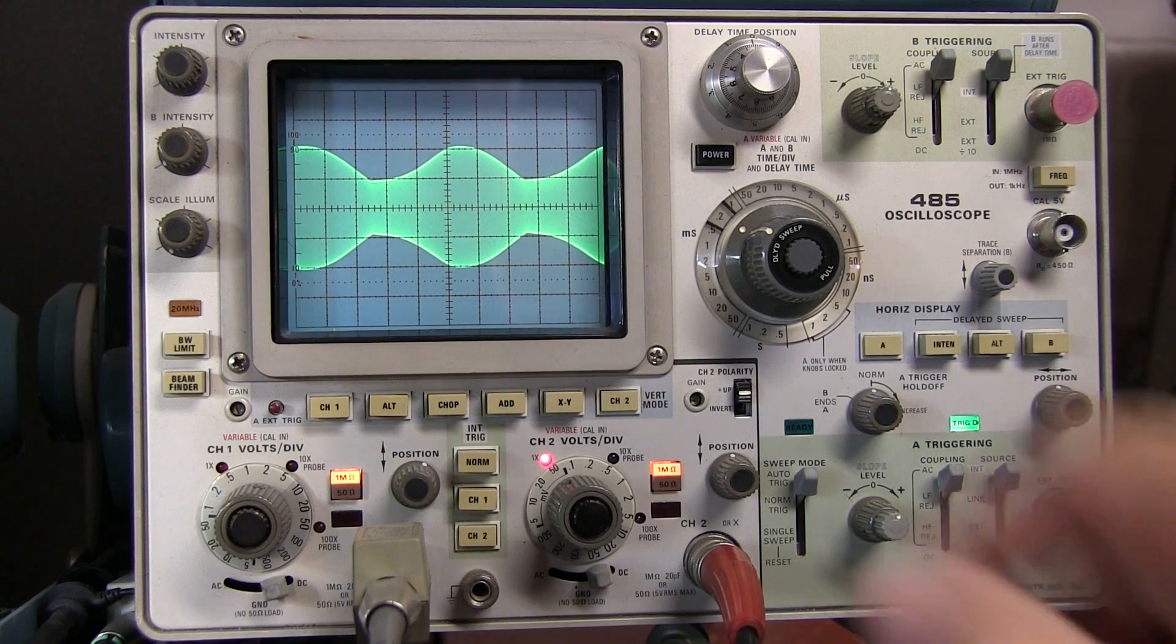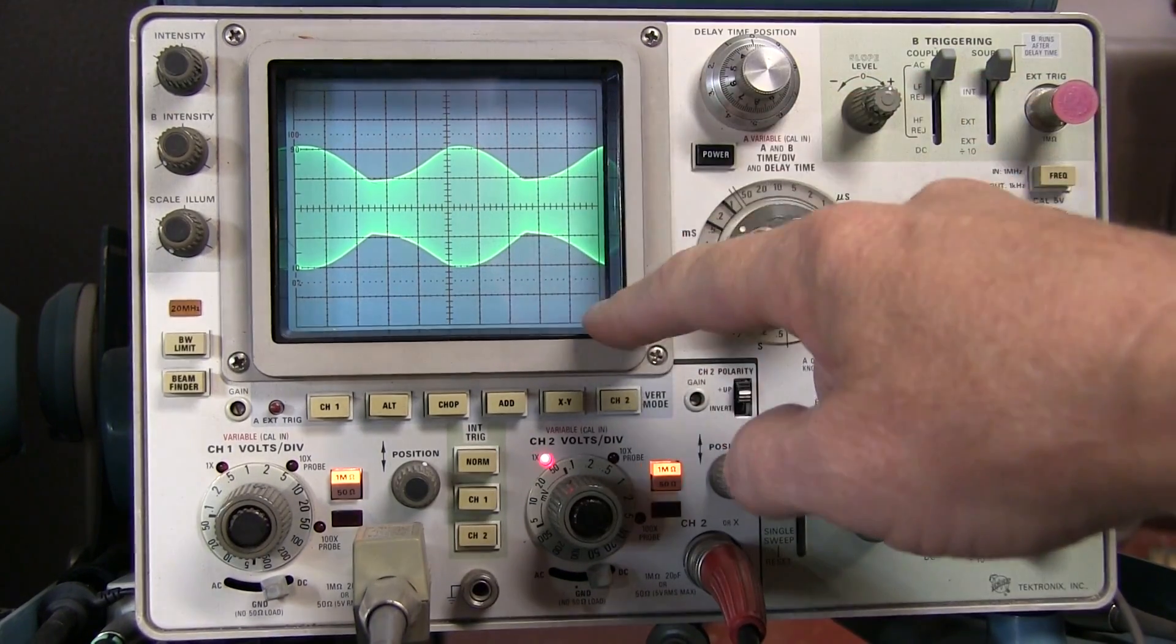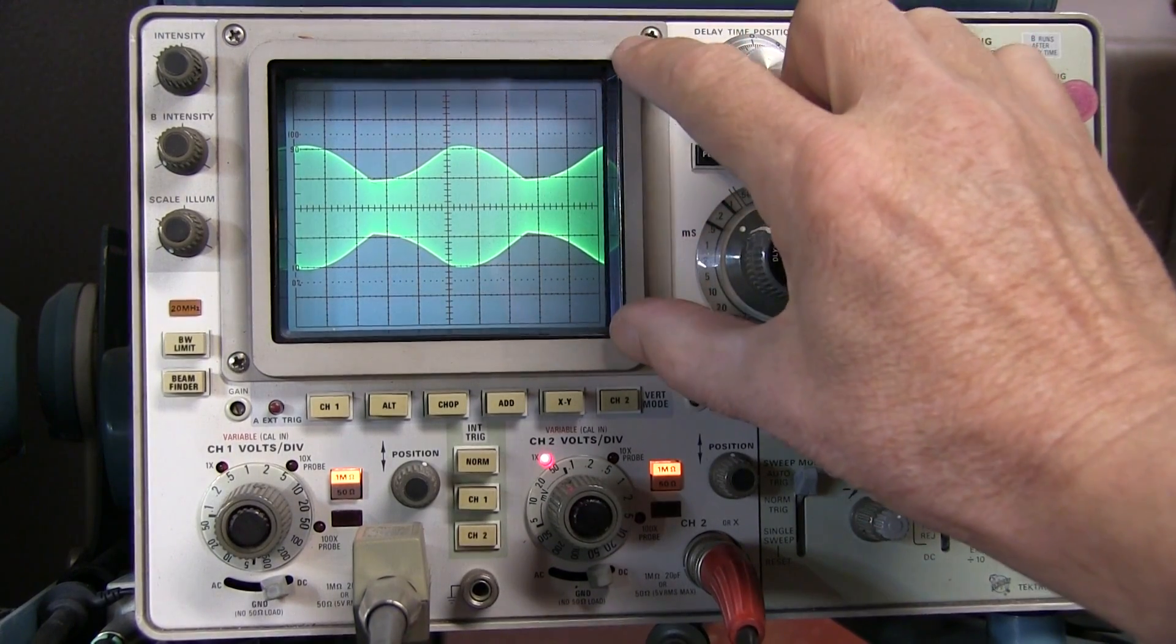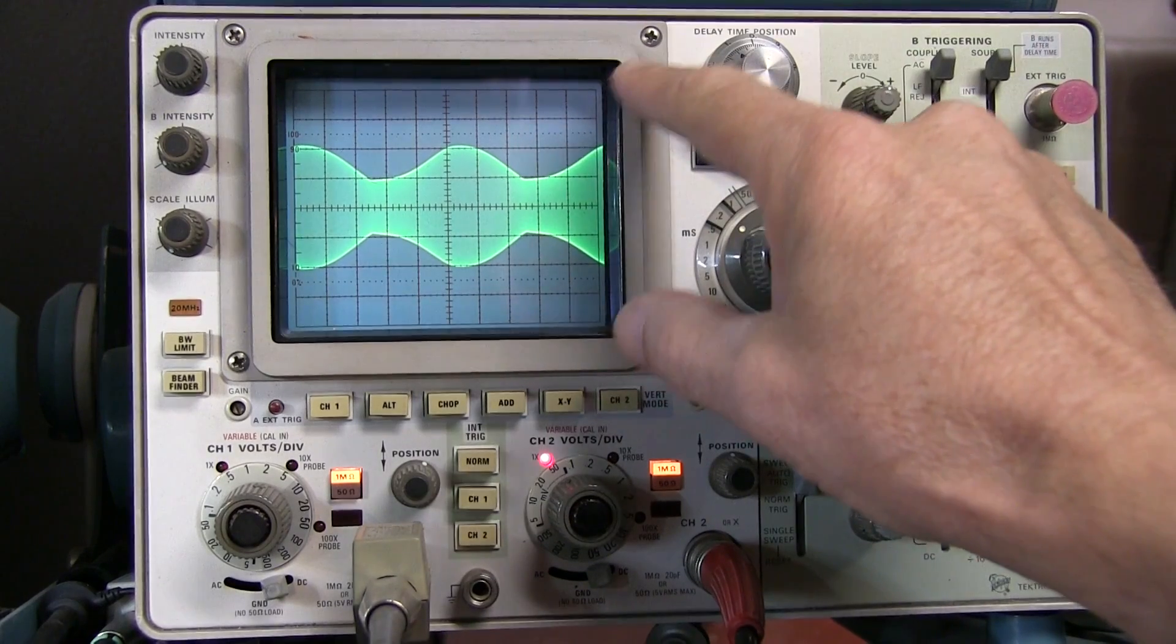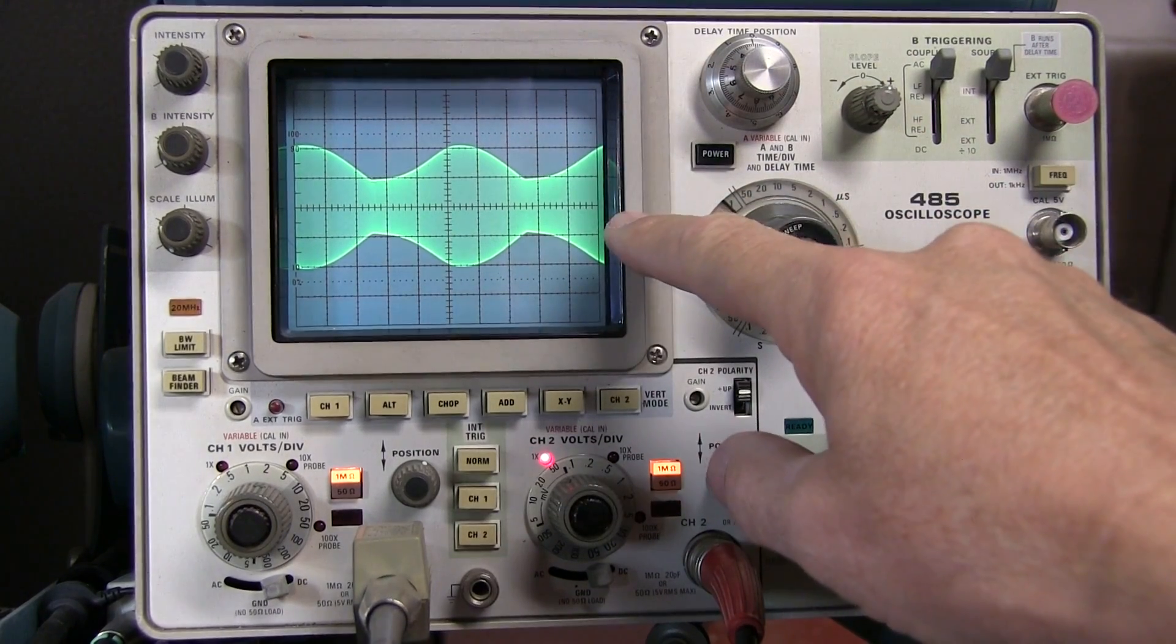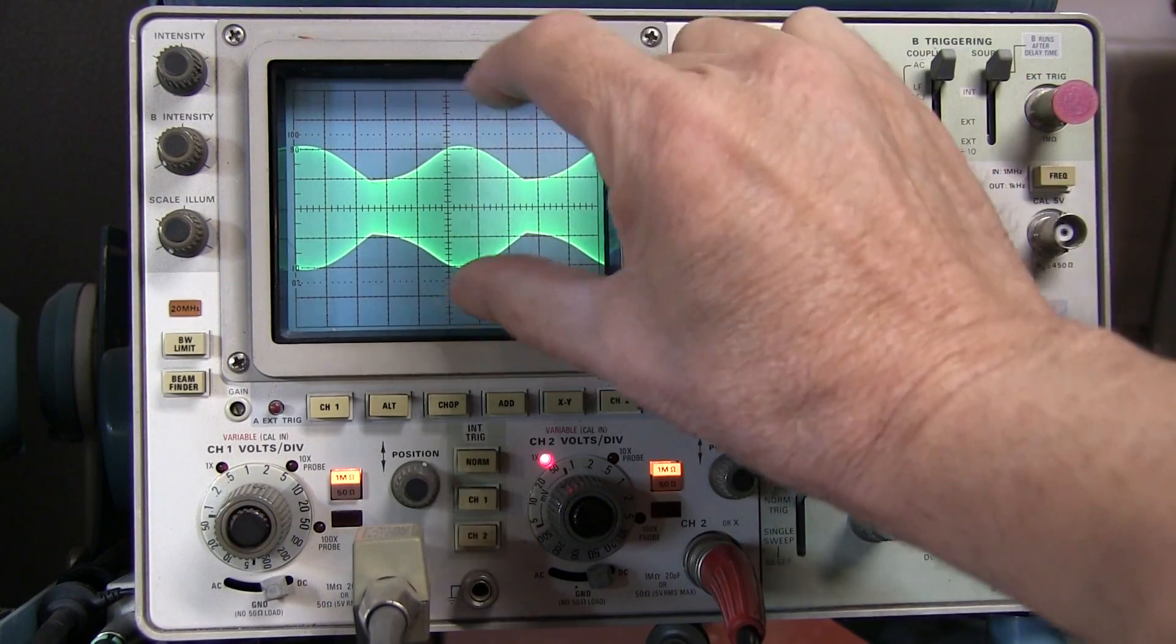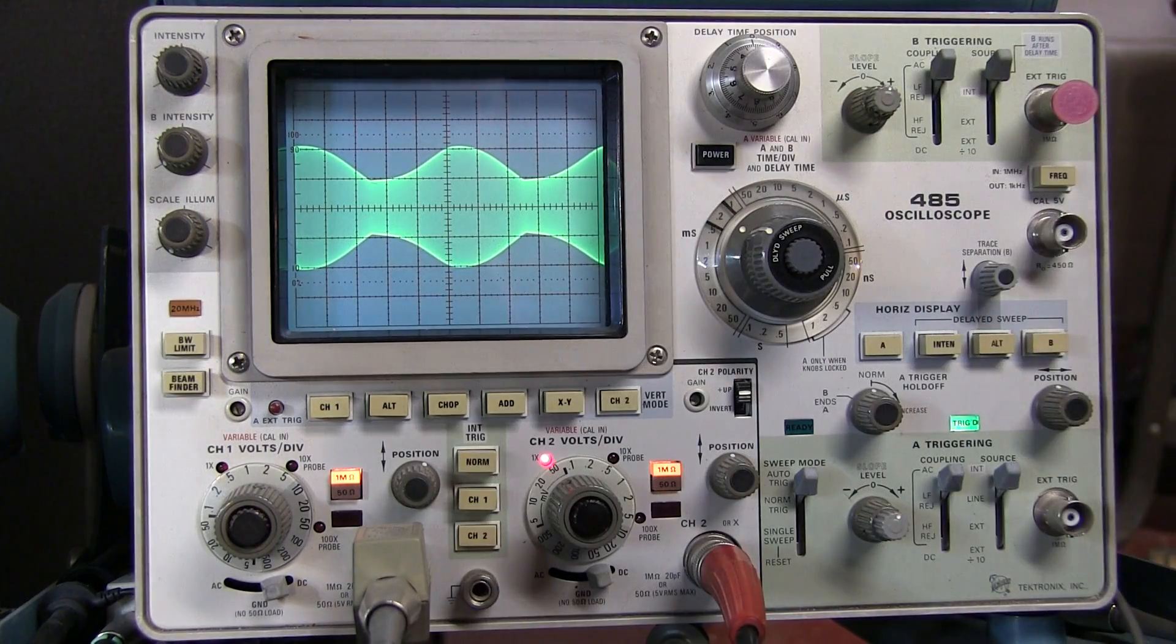Now, in order to make the measurements, we're going to be counting divisions or subdivisions on the screen. So to minimize error, we want to make the signal as large as we can on the screen. And that's okay, because we really don't care what the absolute voltage measurements are. We just need the relative measurements of the number of divisions for the peak and the number of divisions for the trough.